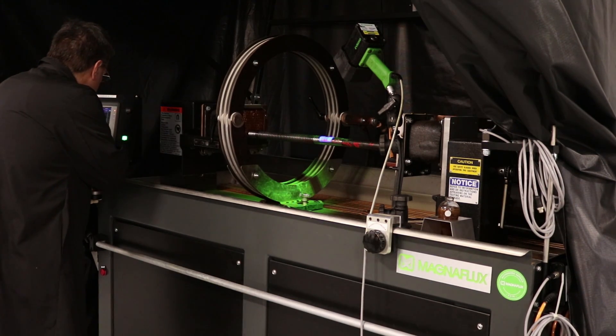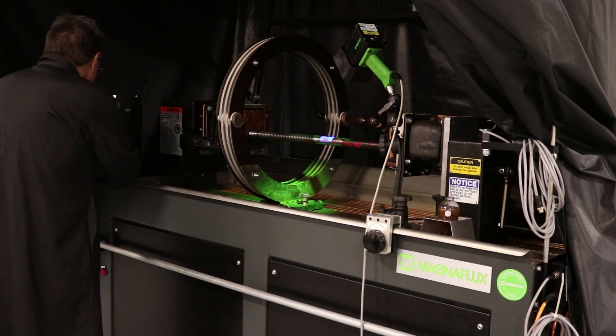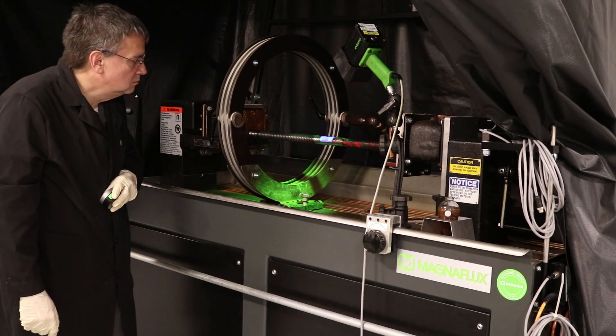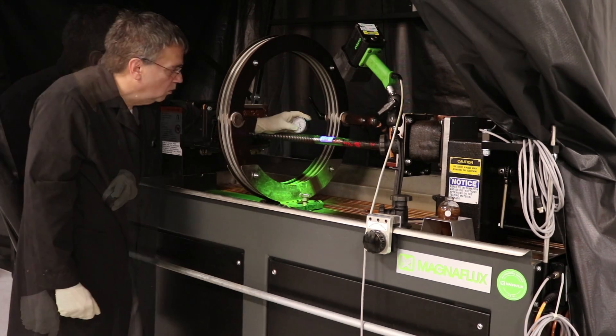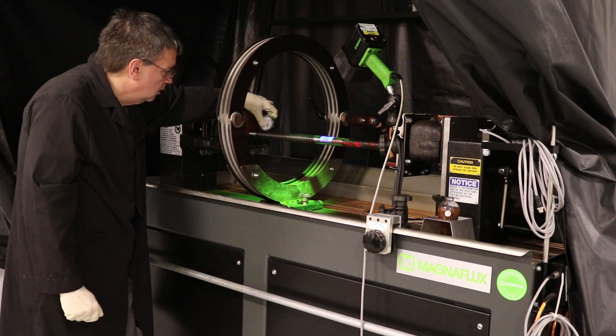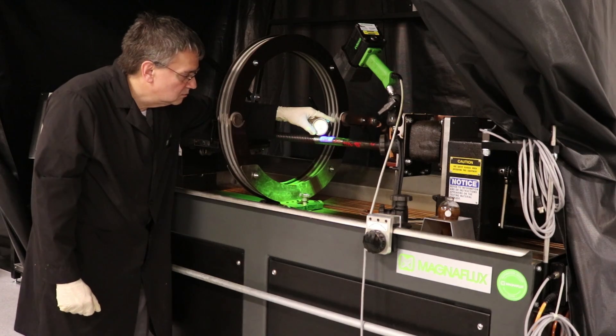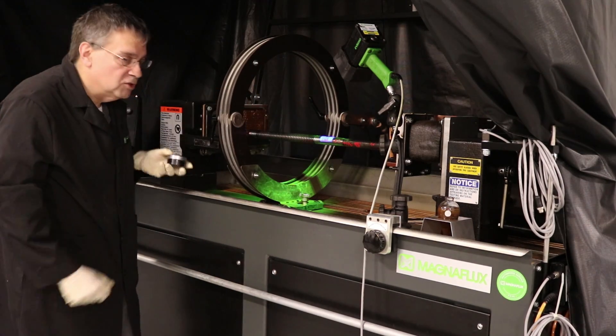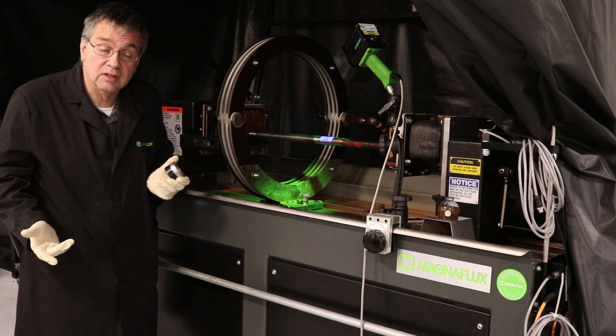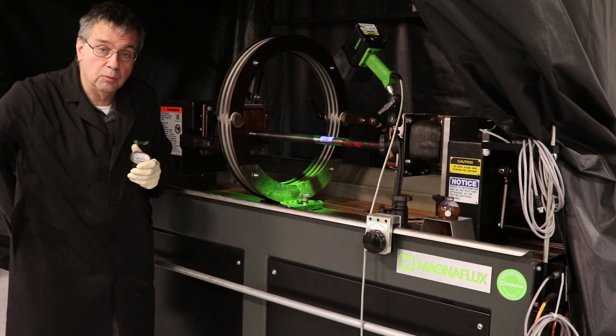So now after I run the demagnetization cycle, we can check and the part is now demagnetized. Once the part is demagnetized to your specifications, the normal specification is less than plus or minus 3 gauss, you may then take the part to continue processing it.